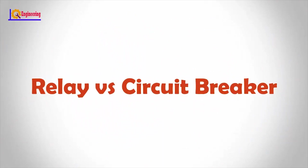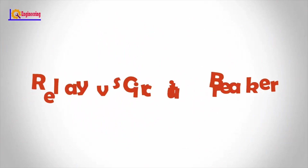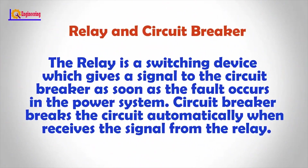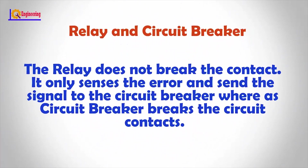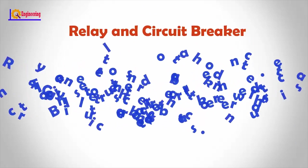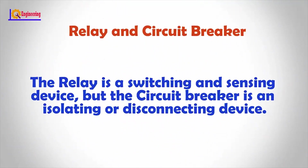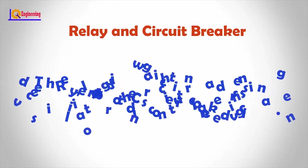The relay is a switching device which gives a signal to the circuit breaker as soon as the fault occurs in the power system. The circuit breaker breaks the circuit automatically when it receives the signal from the relay. The relay does not break the contact — it only senses the error and sends its signal to the circuit breaker, whereas the circuit breaker breaks the circuit contacts. The relay is a switching and sensing device, but the circuit breaker is an isolating or disconnecting device.